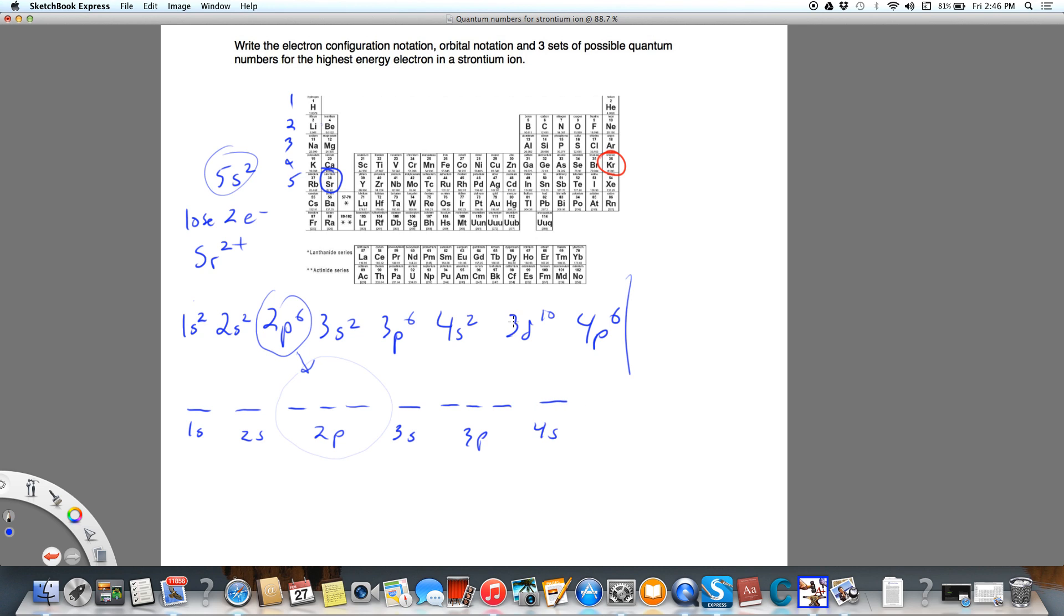Then we have 3d 10, so that's 5 orbitals. And then lastly, we've got 4p 6. Again, we have lost the 5s. I shouldn't have written the 10 and the 6, that's not necessary, we don't need to show that, we're just going to show the electrons and we'll see what they add up to.